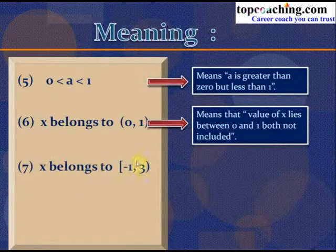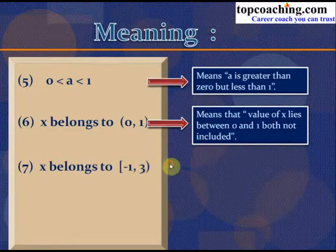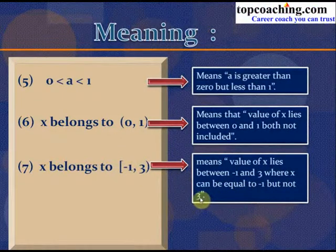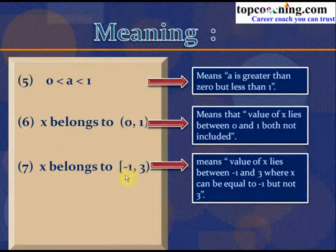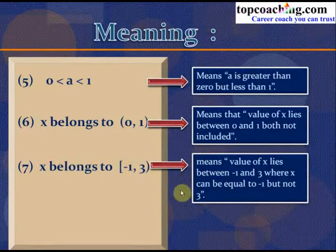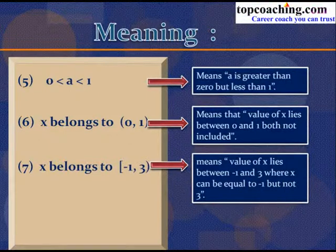If x belongs to [-1, 3), the bracket signs have changed — the closed bracket means x can equal -1, but the open bracket means x cannot equal 3. So x lies between -1 and 3: x can be equal to -1 but should not be equal to 3.